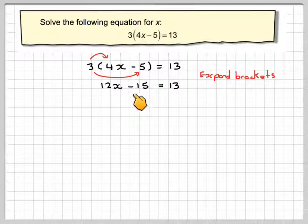The next step is to try and get x on its own. So the opposite of taking 15 is to add 15. That's just going to leave 12x on that side, and then 13 plus 15 is going to give me 28.